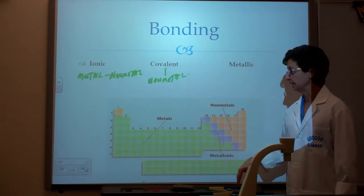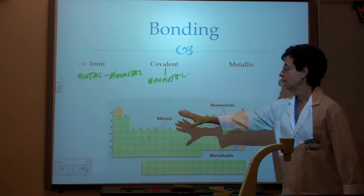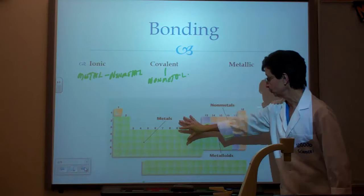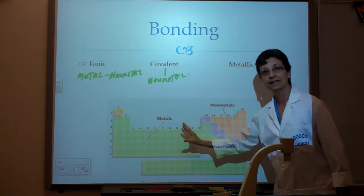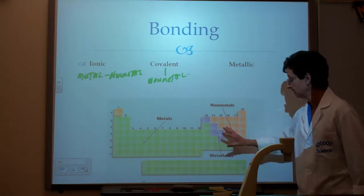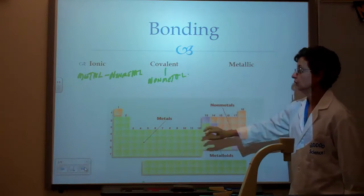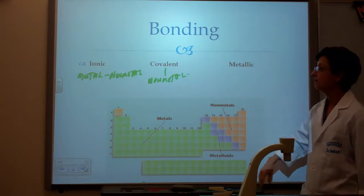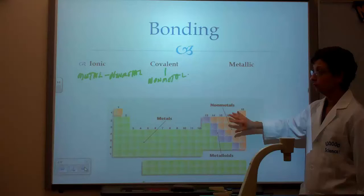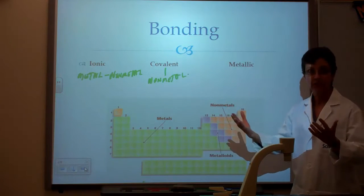Let's review a little bit. Metals all come from the left side of the periodic table, the left side of the zigzag line. On this side are all the nonmetals. So metal and nonmetal form an ionic bond. Two nonmetals form a covalent bond, and metallic bonds are formed by metals.